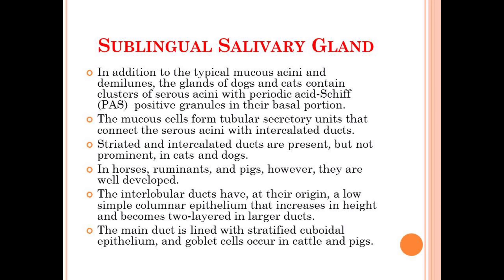The next characteristic of the sublingual salivary gland is that apart from the typical mucus acini and serous demilunes, the glands of dogs and cats contain a cluster of serous acini with periodic acid-Schiff (PAS) positive granules in the basal portion. PAS is a staining procedure used commonly in histological laboratory detection, and here it is used for the detection of salivary gland tumours, which is usually common in the case of dogs and cats.